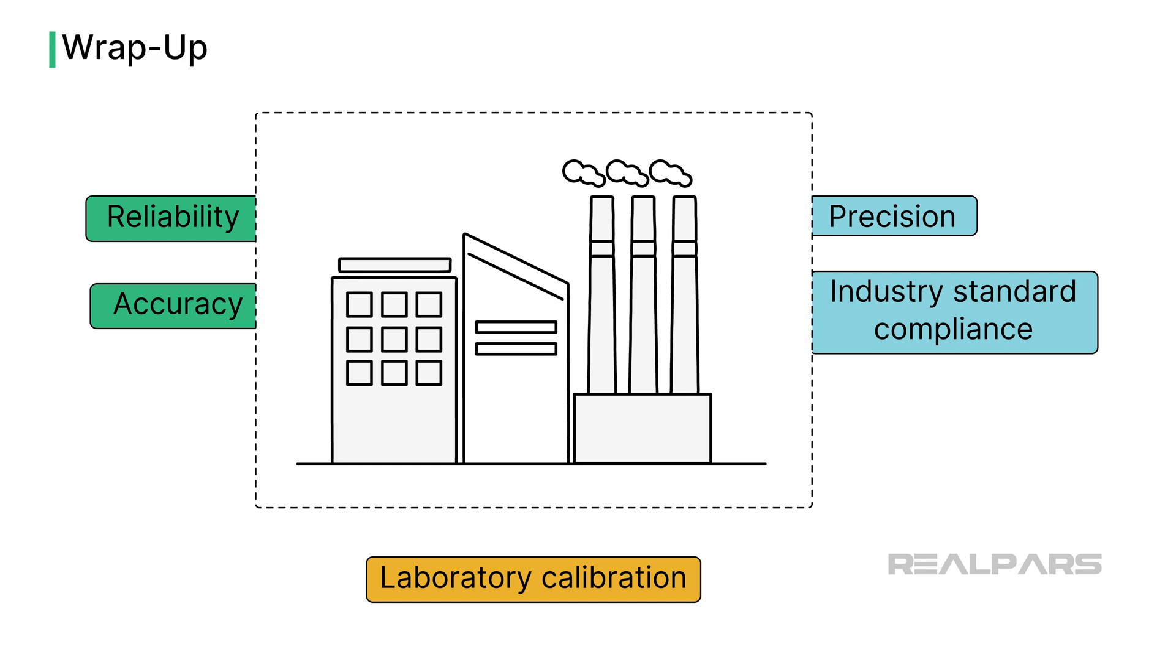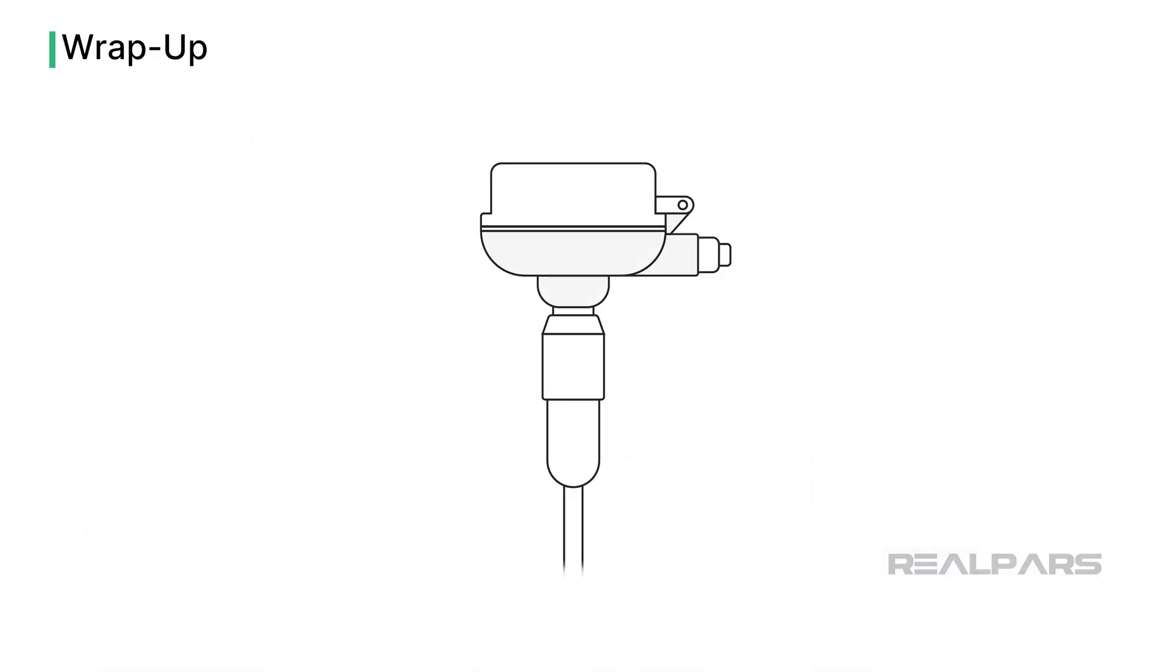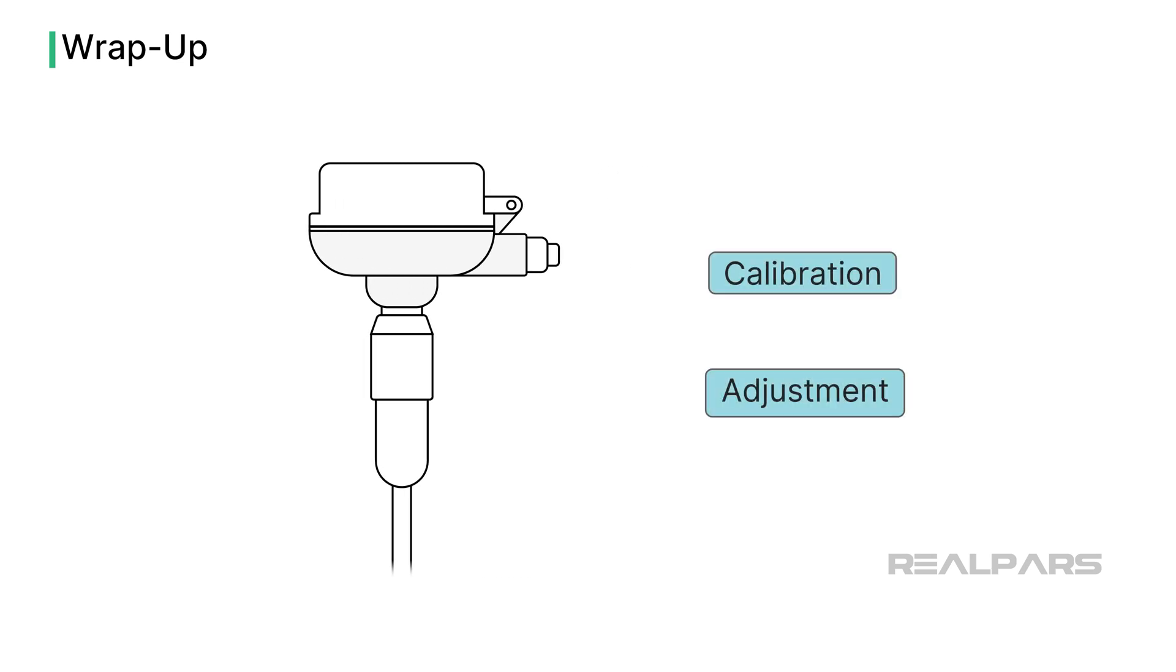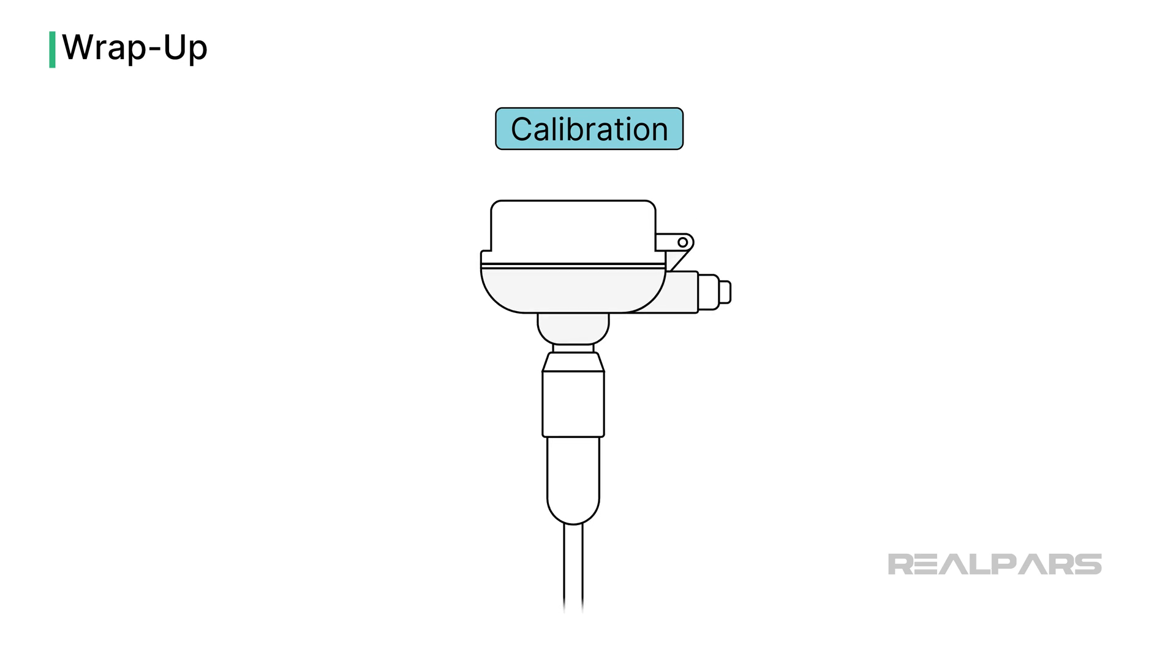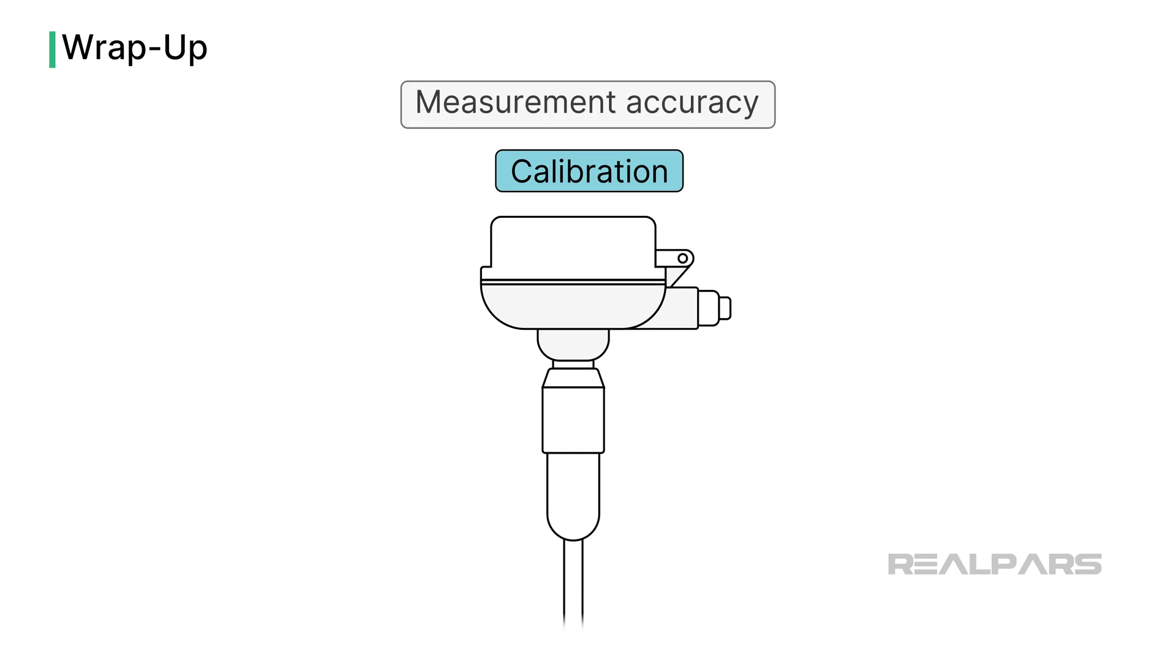Let's summarize what we've discussed. Calibration and adjustment are related but distinct concepts. There are lots of definitions for calibration. Calibration plays a critical role in ensuring measurement accuracy.